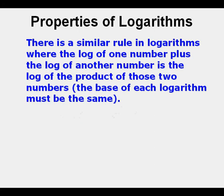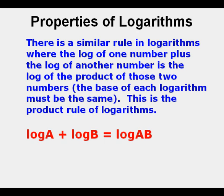There's a similar rule in logarithms where the log of one number plus the log of another number is the log of the product of those two numbers. The base of each logarithm must be the same. This is called the product rule of logarithms: log a plus log b equals log ab.